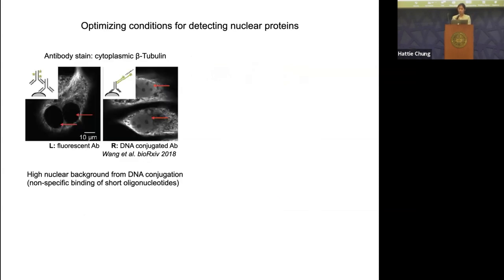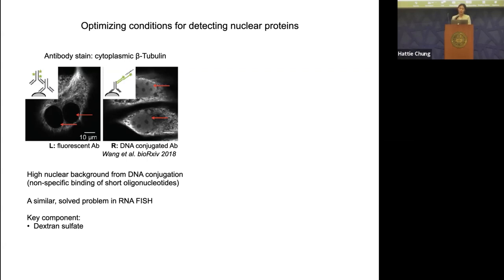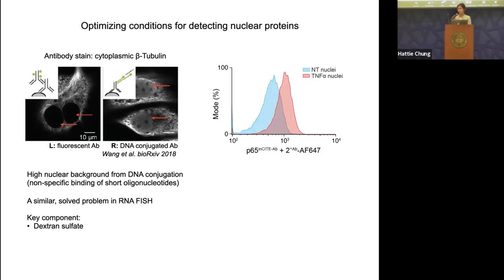This is a fairly well-known problem. Work from Peng Yin and George Church's group showed that even for cytoplasmic protein staining with fluorophore-conjugated antibodies, you see absence of signal in the nucleus, but with DNA-conjugated antibodies there is high nonspecific background — because many nuclear proteins bind nonspecifically to short oligonucleotides. One key reagent we found critical was dextran sulfate. Adding dextran sulfate to our blocking and antibody staining buffers gave clear resolution between non-treated and TNF-alpha treated nuclear populations, outperforming two commercially available intracellular buffers.